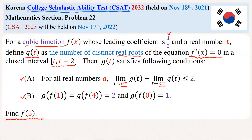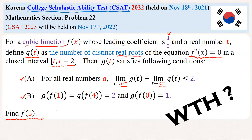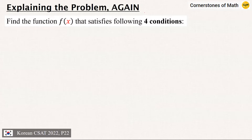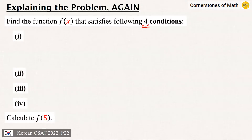I think the most natural response after reading this problem would be: what the heck? Seriously, I think the most difficult part in the entire process of solving this problem is the beginning — that is, understanding the problem in the first place. There are some conditions given here and there, but they are written in a sort of confusing way. So I think I should explain the problem one more time in a more organized manner. Simply put, the problem can be stated like this: find the function f(x) that satisfies certain conditions, which I will summarize as four conditions, then find the value of f(5). Quite simple so far, right?